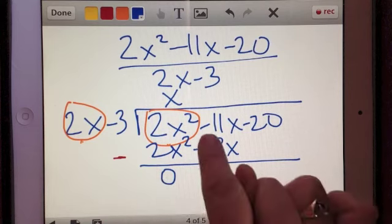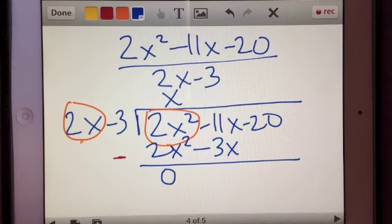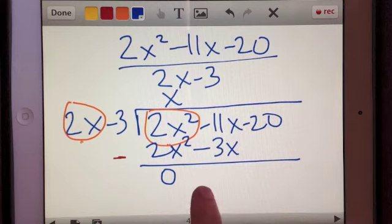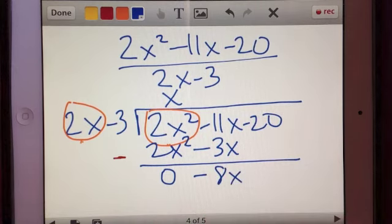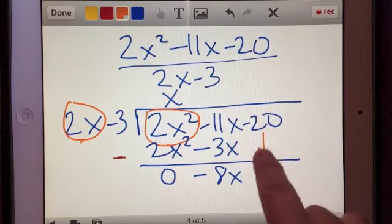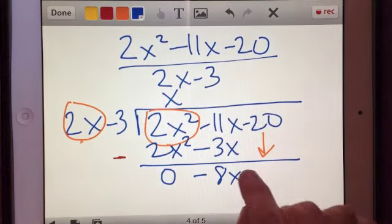Now here's where it might get confusing. Negative 11x minus negative 3x. This is going to get me negative 8x. And now I need to bring down my next term, which in this case is negative 20.